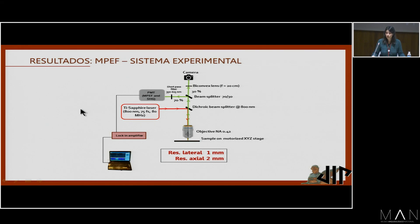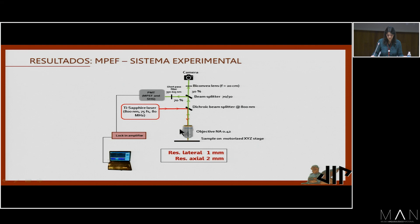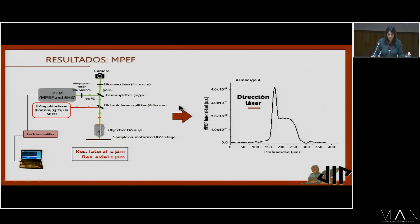Antes de los resultados de la fluorescencia por excitación multifotónica, quiero explicar brevemente el sistema experimental. Este consiste en un láser de titanio-zafiro que emite a 800 nanómetros, en el rango del infrarrojo cercano, dirigido por diferentes componentes ópticos a través de un objetivo con gran apertura numérica. Este objetivo permite focalizar el láser sobre la muestra, situada sobre una plataforma motorizada. La señal es recogida por el objetivo, se dirige a un beam splitter que deja pasar el 30% hacia una cámara para monitorizar los análisis, y el otro 70% pasa a un fotomultiplicador, a un amplificador y finalmente al ordenador. La señal recibida muestra por un lado la intensidad en unidades arbitrarias y por otro la profundidad.